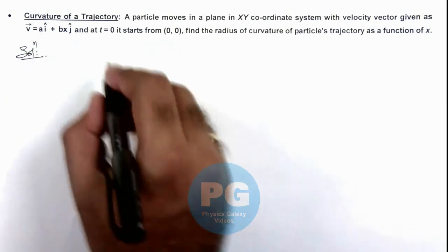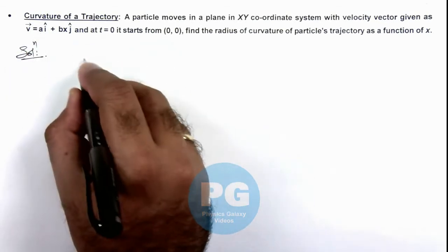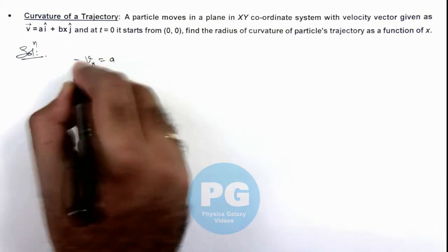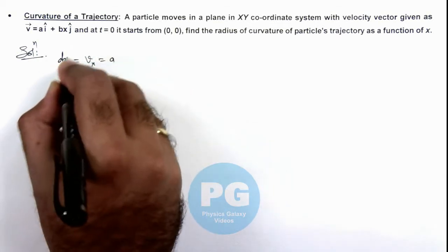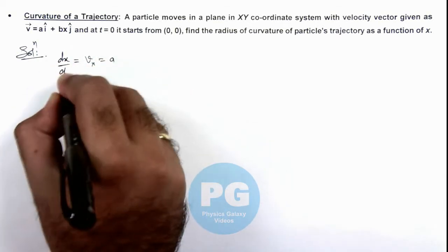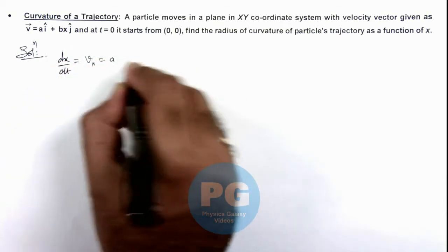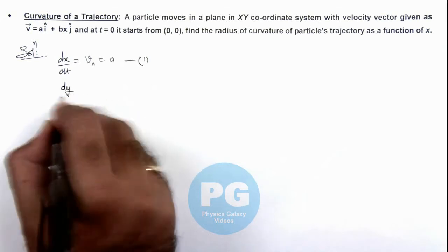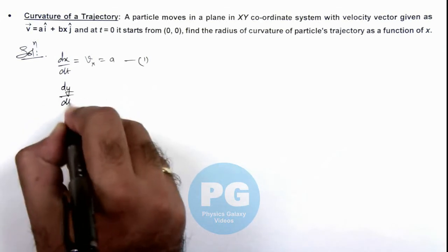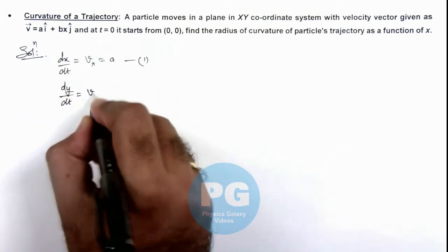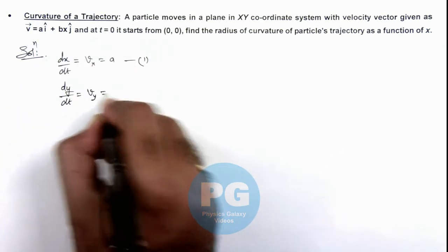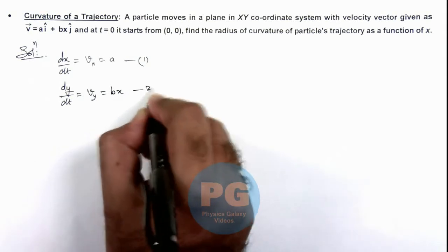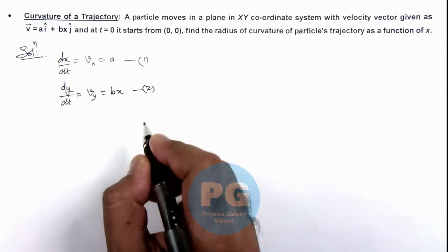The x-component of velocity vx is given as ay, which can be written as dx/dt — this is our first equation. The y-component of velocity dy/dt is vy, which equals bx — this is the second equation.